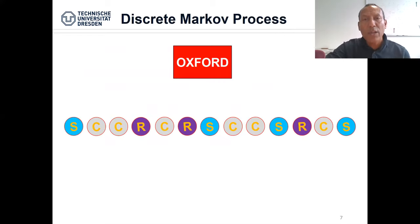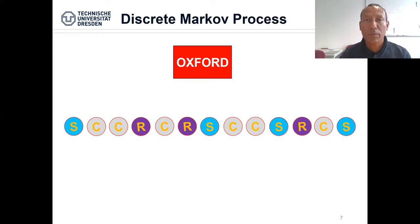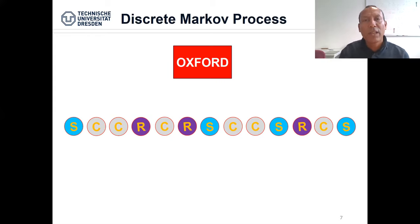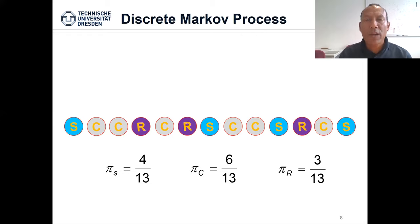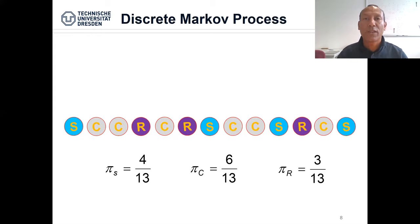Secondly, for a long period of time — for example, for the city of Oxford — each day at noon we take a measurement and map this analog signal to a digital signal, examining whether there is some underlying pattern in the way the weather changes. If we consider this sequence of observations, we see that rain comes three times, cloudy comes six times, and sunny comes four times. We assume we have taken sufficient measurements to represent the weather in Oxford.